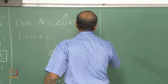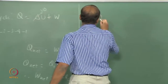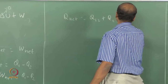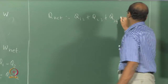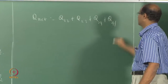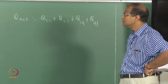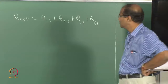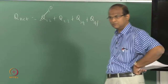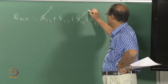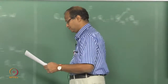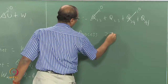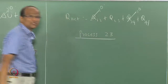Now what is this Q net anyway? An adiabatic process has no heat transfer, so those two processes contribute zero to Q net. Now consider process 2-3.